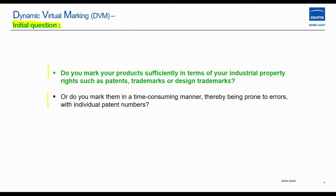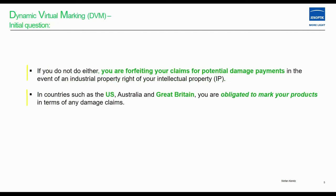Gin Optic is the first company worldwide to use dynamic virtual marking. I reported on this at Kramer and Hofman's customer days as best practice. The initial question for you and the podium is: do you mark your products sufficiently in terms of your industrial property rights such as patents, trademarks, or design trademarks? Or do you mark them in a time-consuming manner, prone to errors with individual patent numbers? In countries such as the US and Great Britain, if you do neither, you are forfeiting your claims for potential damage payments.